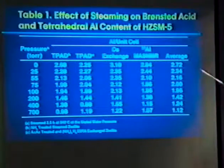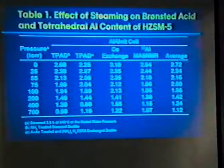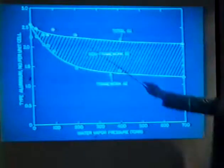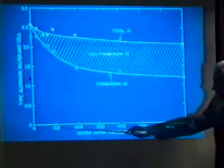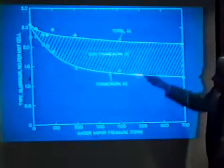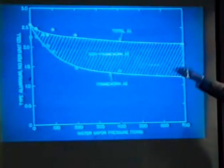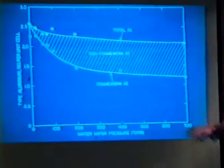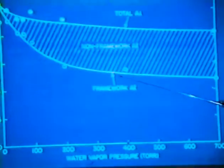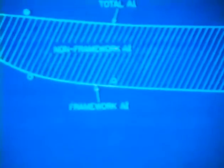Now, what happens to the catalytic activity during that process when we do this? We should lose the active sites, of course. Before I go to this, it's just another representation. If the steaming conditions go up, this is the framework aluminum goes down, and the development of non-framework aluminum, a little bit toward the limit, after extraction. By and large, we cannot extract this aluminum. It's just in the framework, in the non-framework aluminum. Next.